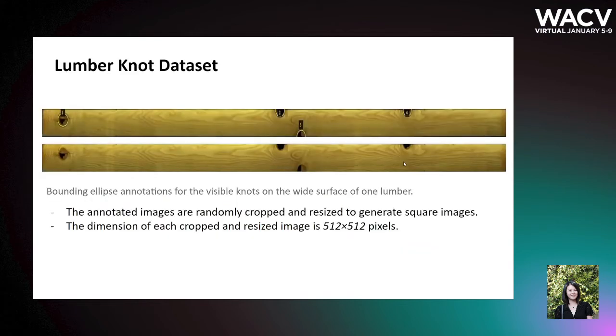After we fixed the distortion, we labeled our data using the VGG annotator to mark the visible knots as ellipses, like in the photo. The annotated images are then randomly cropped and resized to generate square images for object detection purposes. The dimension of each cropped and resized image is 512 times 512 pixels.